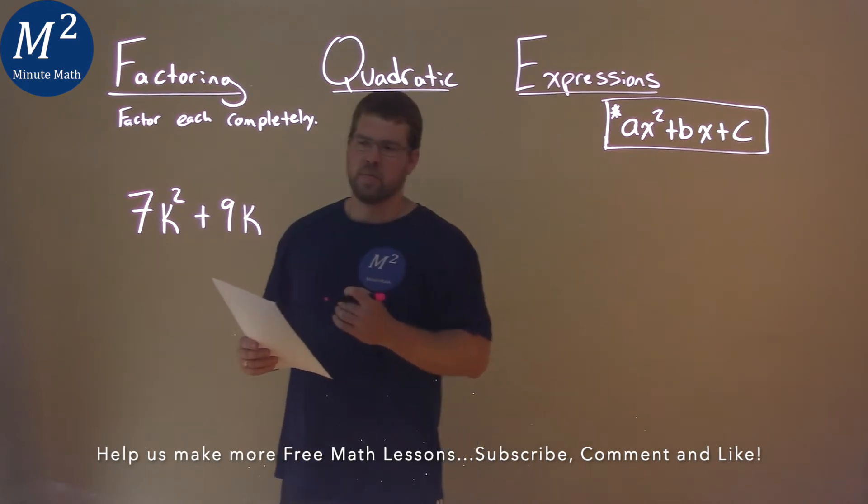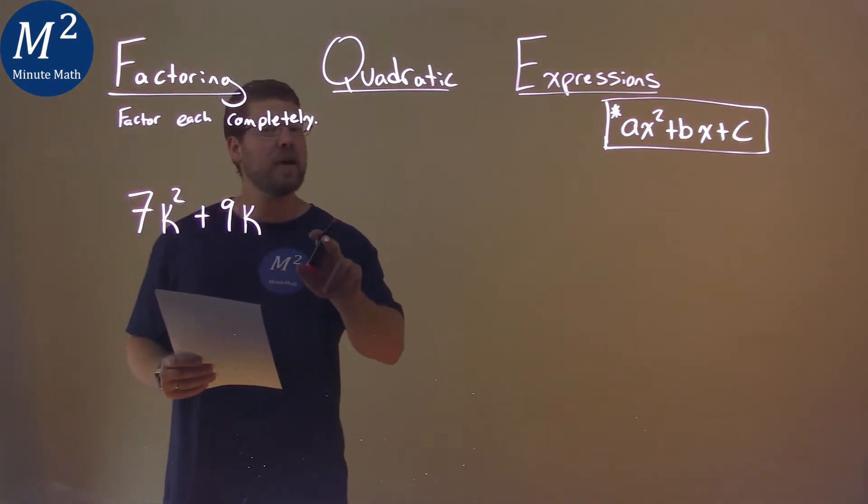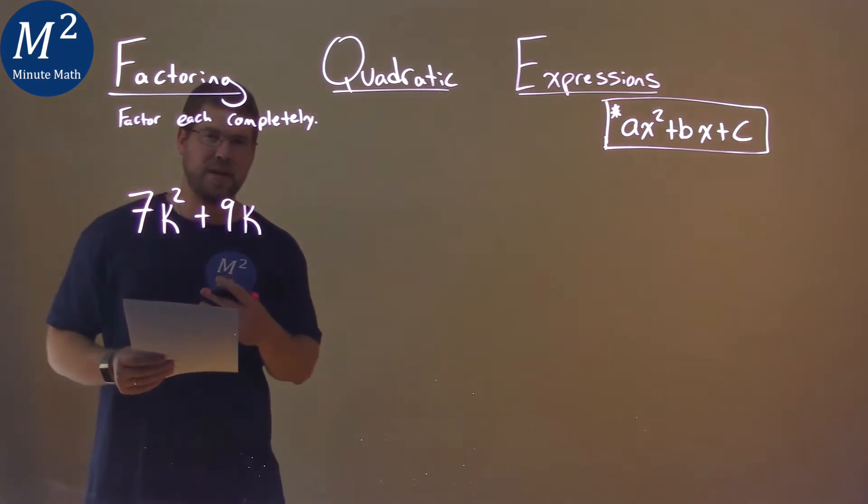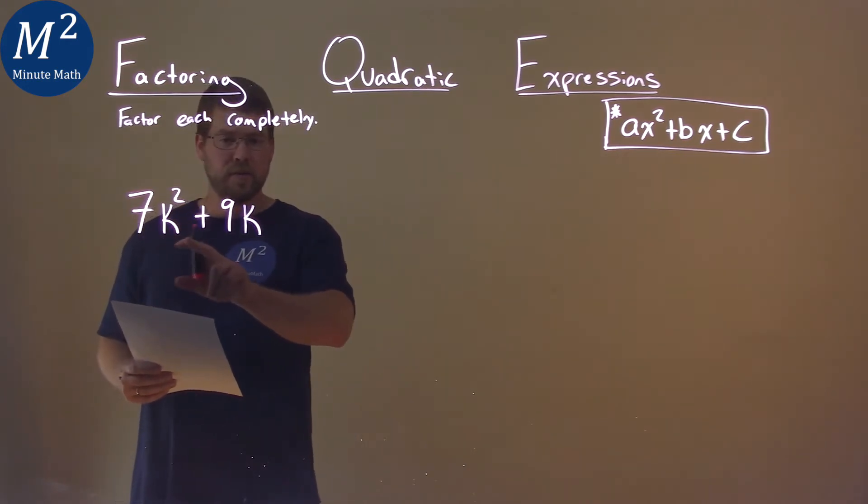Now this is an interesting problem here. Notice we only have an a value, a b value, and our c value is not written, meaning it's zero. When that happens, we actually have a pretty easy way to factor this. I see a k in the first and second term.